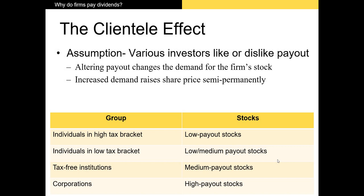The next payout theory is the clientele effect. This theory is based on the idea that some investors like dividends and others don't. If there are more investors in the market that like dividends, then the firm should pay a larger dividend to attract those investors as shareholders, thus boosting the price — since if there's more demand, we would expect the price to rise.